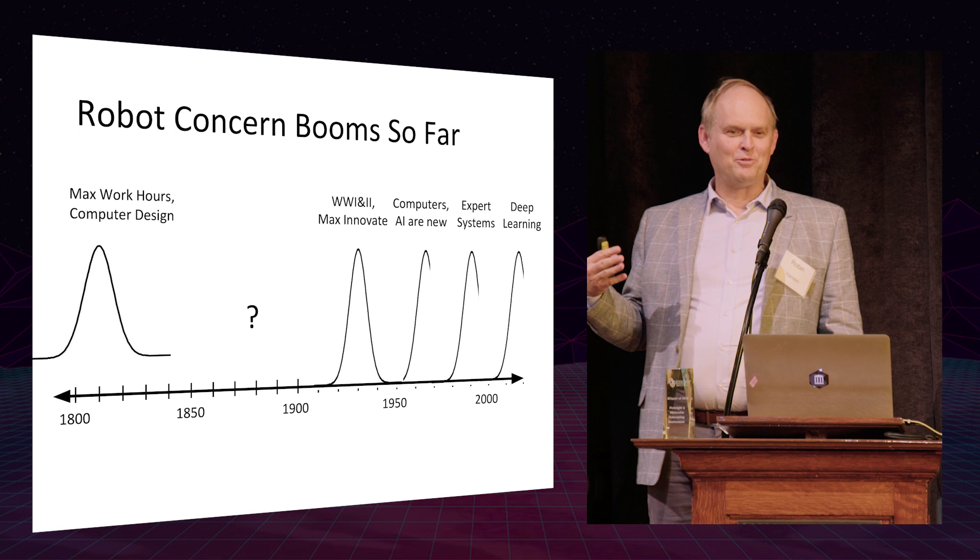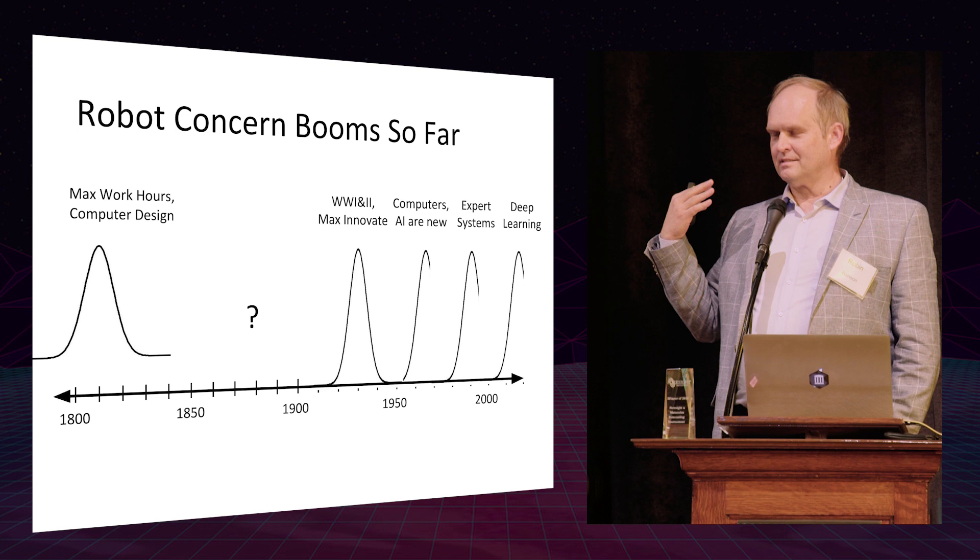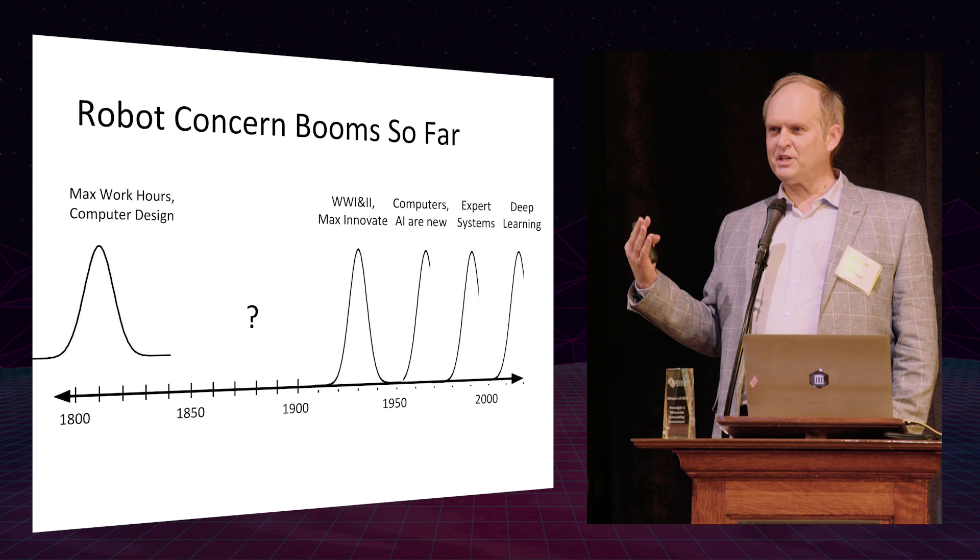In the 1930s, a big burst of innovation and people were concerned in movies and fiction and everywhere about this huge change in automation that was happening at the time. The introduction of the electronic computer created another huge burst of concern. There were presidential commissions, there were major reports, there were big front-page articles in the leading newspapers about automation and it taking over all the jobs.